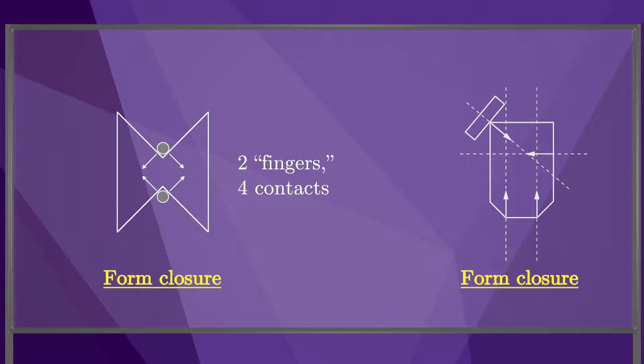This figure shows a bow-tie-shaped planar body in a form closure grasp by two fingers, creating four contact normals. Our graphical methods are convenient for visualizing form closure in the plane, but we can also define a computational test for form closure.